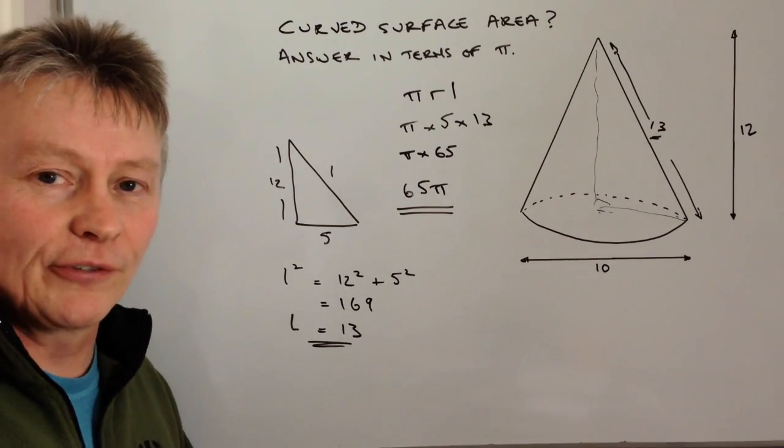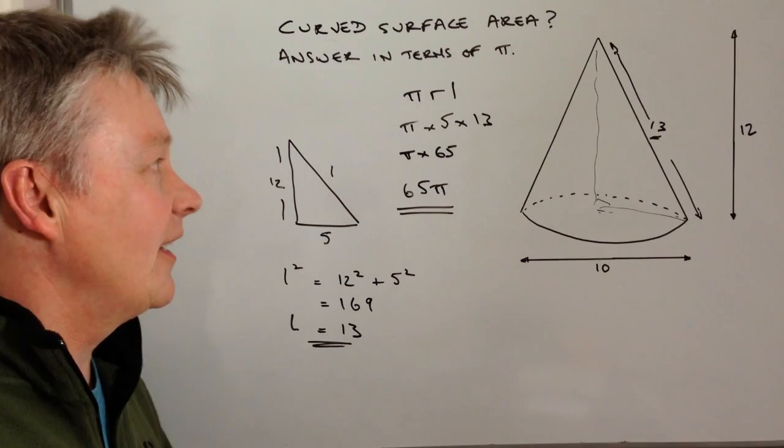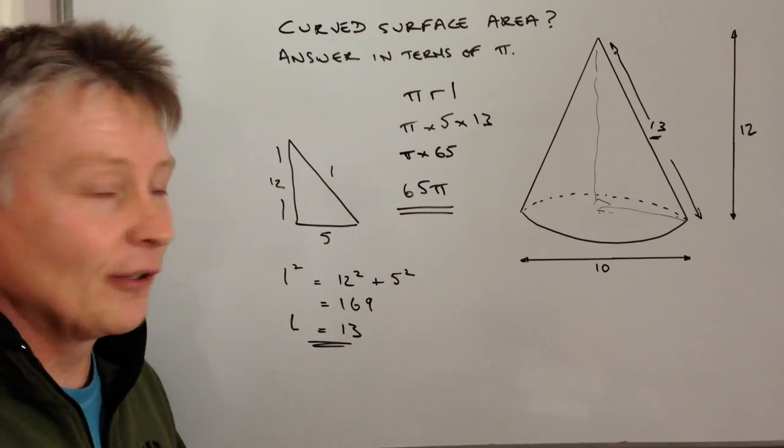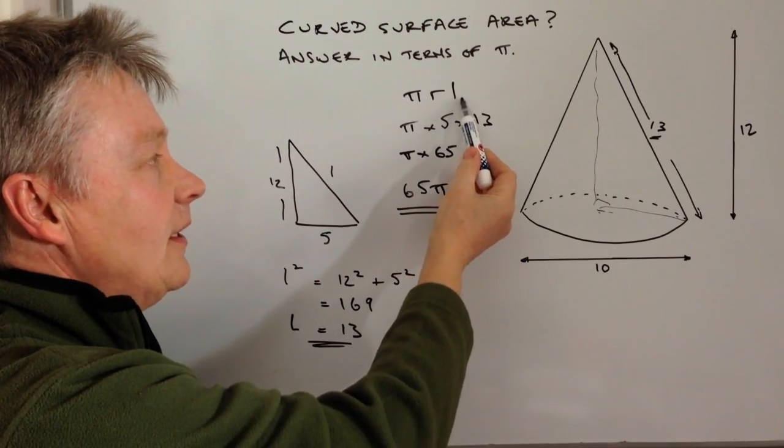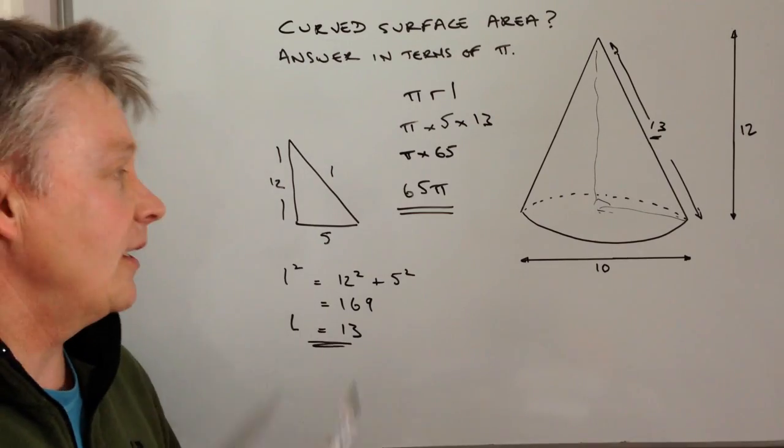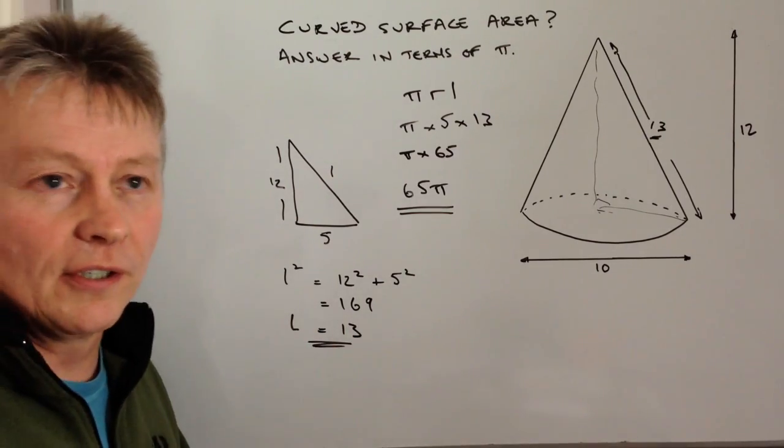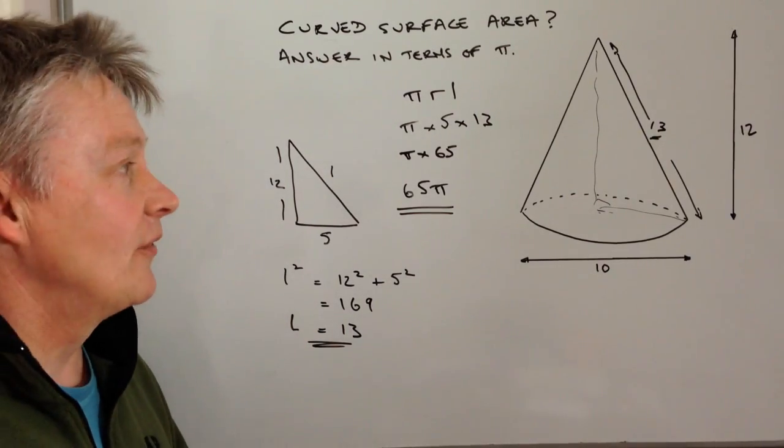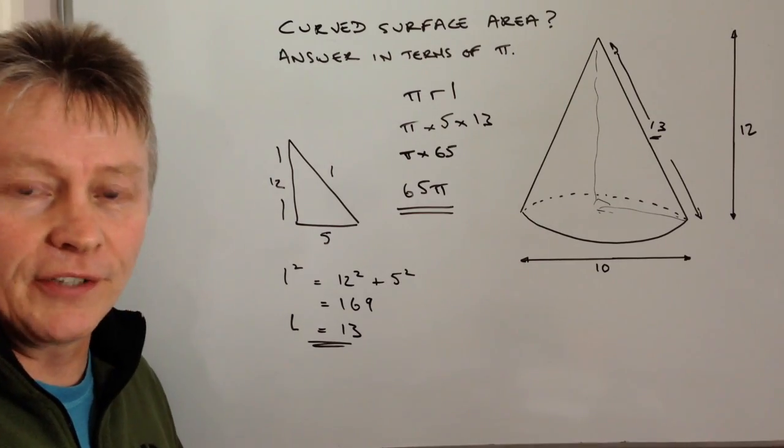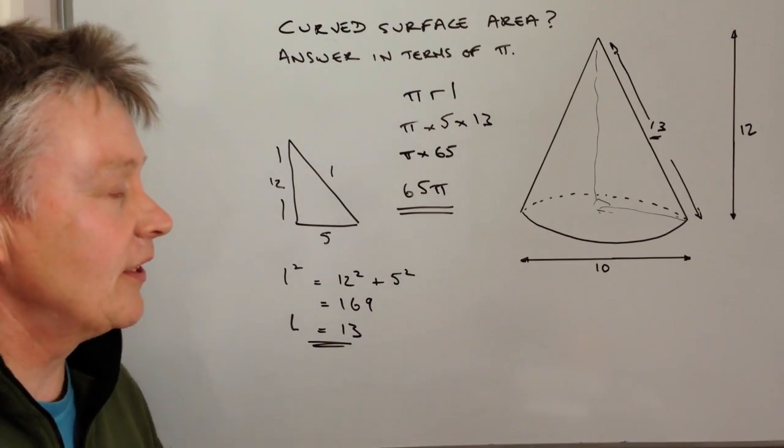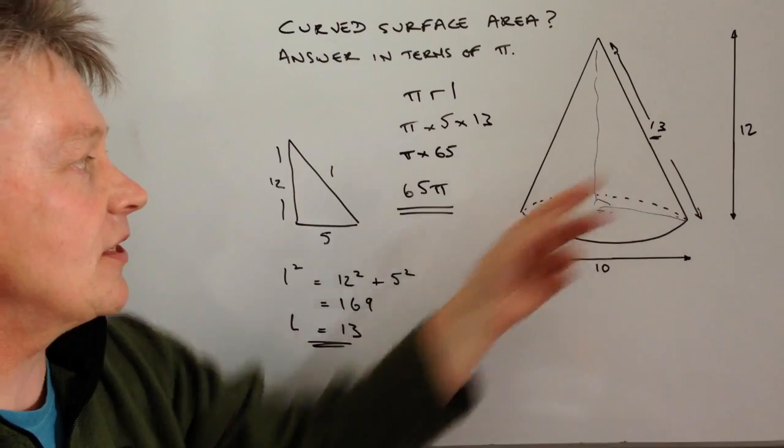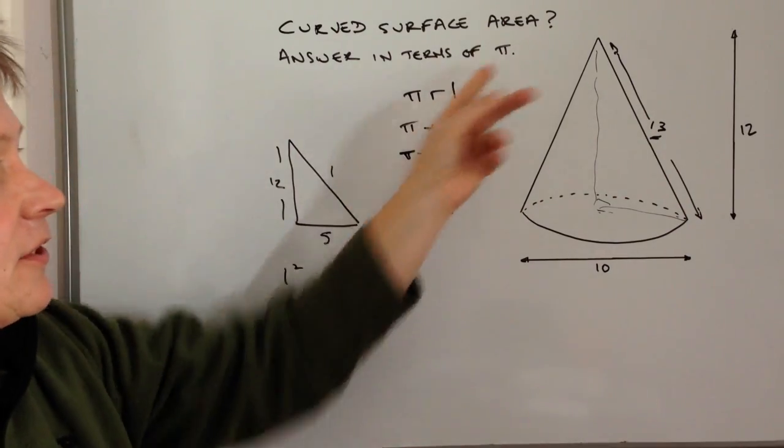I hope that's been okay for you. The key factors to look out for: make sure you use the slant height. If you haven't got the slant height, use Pythagoras or some other method to work it out, and then leave the answer in terms of π.